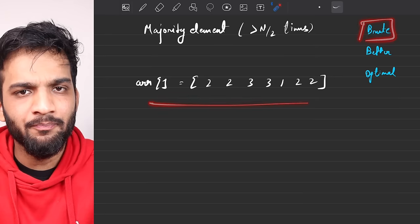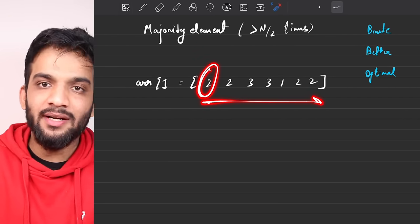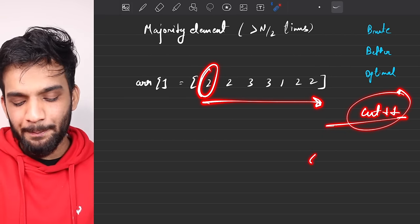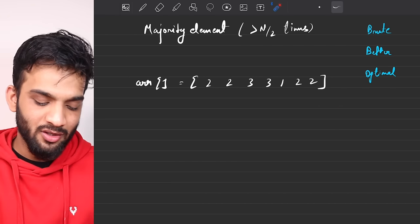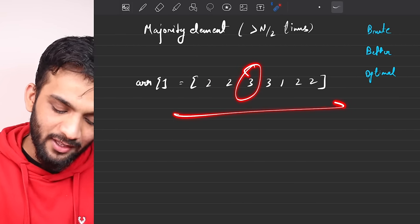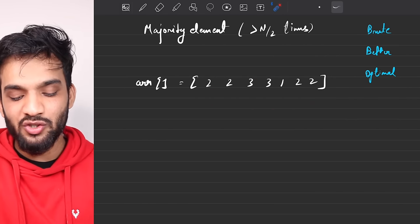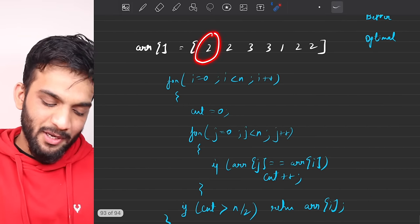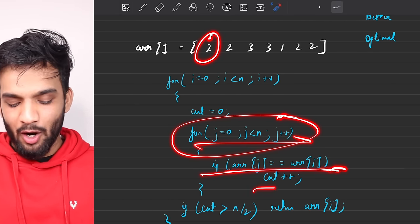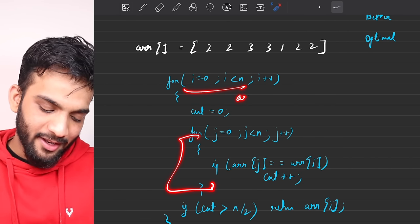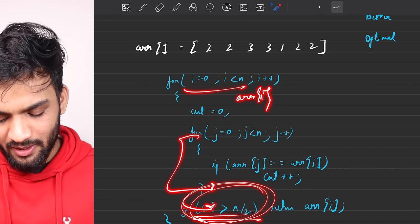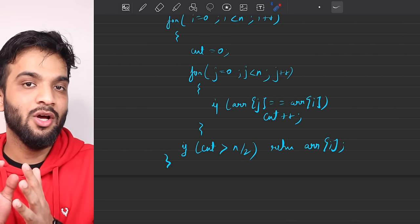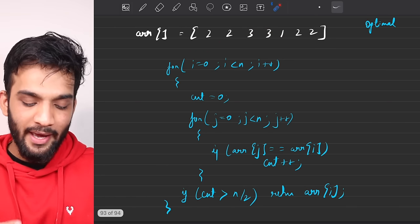What will be the brute force solution? It's very simple — I'll pick up an element and scan through the entire array, count occurrences, and if the count is greater than N by 2 for any element, that is my answer. The code is straightforward: iterate through the array, pick each element, scan again while keeping count, and if count is greater than N by 2, return that element. Otherwise return -1.